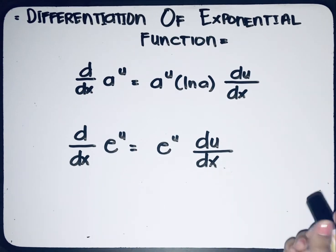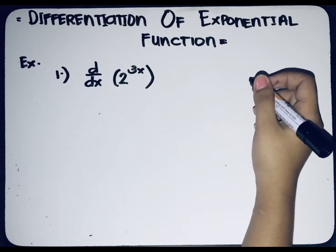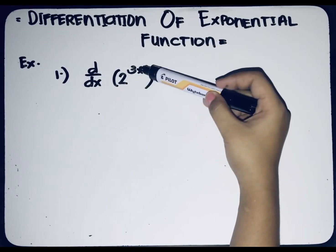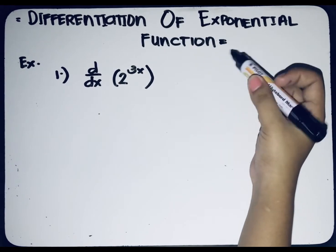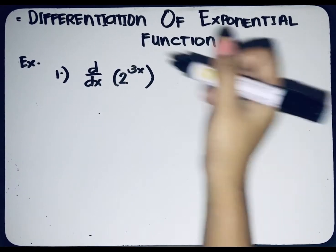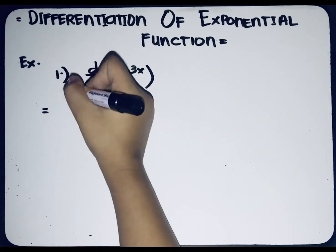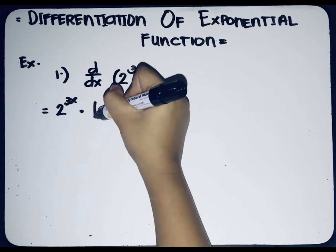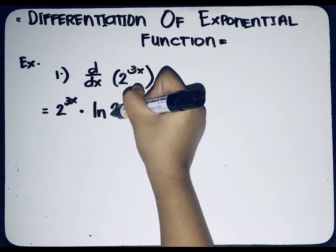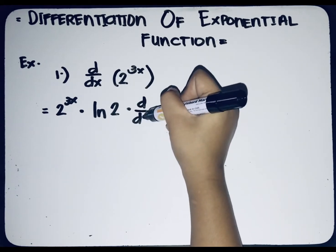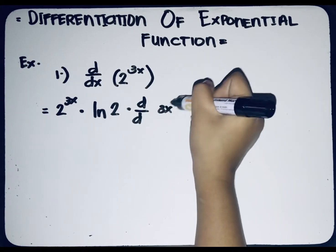Take note of these two formulas because we will be using them in our examples. For the first example, we have to find the derivative of 2 raised to 3x with respect to x. We'll apply the first formula, giving us 2 raised to 3x multiplied by ln(2) then multiplied by the derivative of 3x with respect to x.